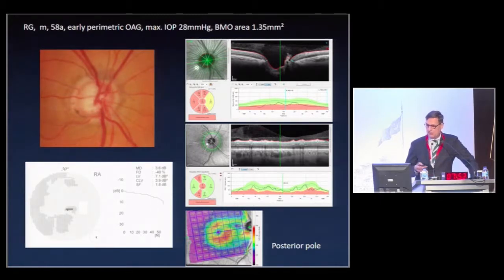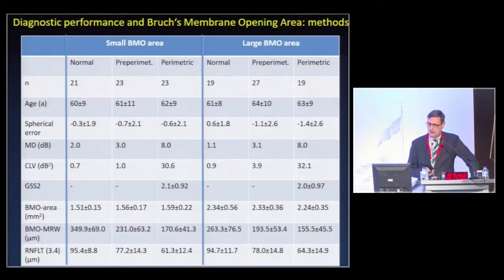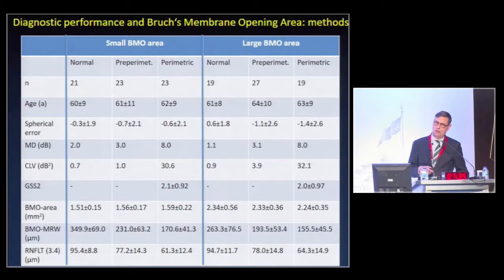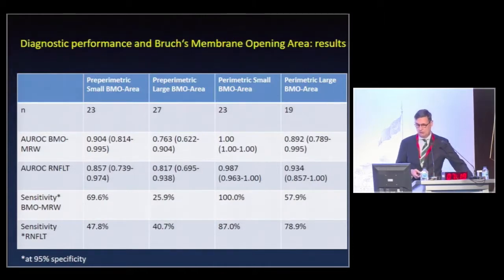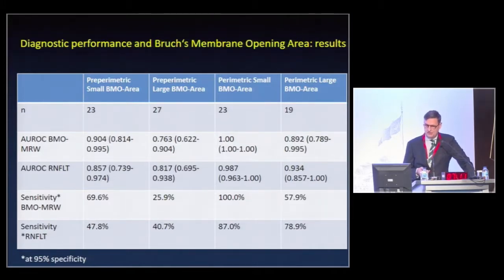Please note that this patient has a rather small disc, with 1.35 square millimeters of Bruch's membrane opening area. In the Gmeiner paper, we also investigated the influence of the opening area, or disc size of the Bruch's membrane opening, dividing our group into small BMO area and large BMO area, taking 1.8 square millimeters as a cut point. In pre-perimetric early glaucoma with small optic discs, the rim measurement MRW performed better than the nerve fiber layer.